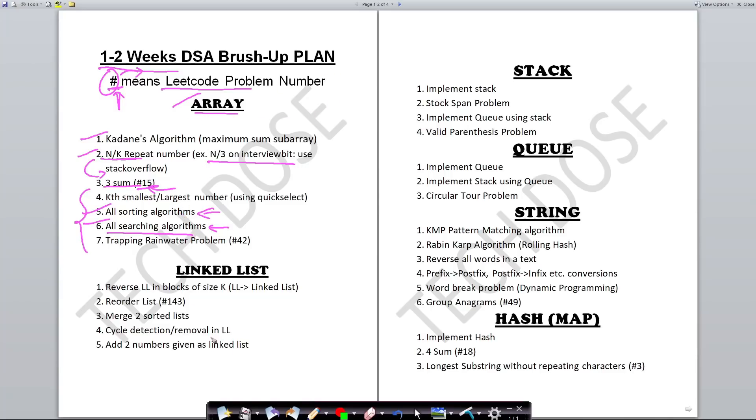Linked list takes the least time. Problems include reversing linked list in blocks of size k, reordering list from LeetCode #143, merge two sorted lists, cycle detection or removal, and adding two numbers represented as linked list. In stack, the most important thing is implementation, stock span problem, implementing queue using stack, and valid parenthesis problem. In queue, it's similar to stack—implement queue, implement stack using queue, and the circular tour problem, which is a very famous problem.